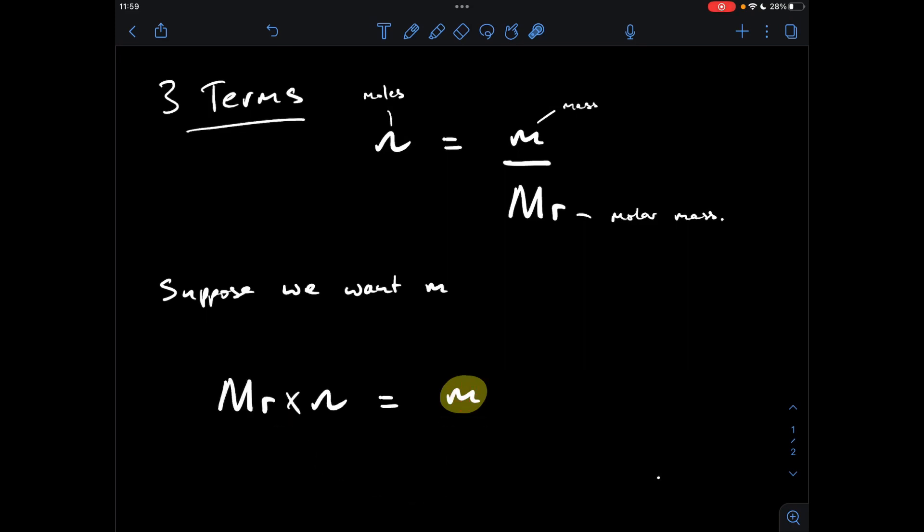So we get that equation that we had with the other method, m equals Mr times n. Now, in fact, we are actually still doing the same thing there, we are multiplying both sides by Mr, but doing it this way is just super quick.